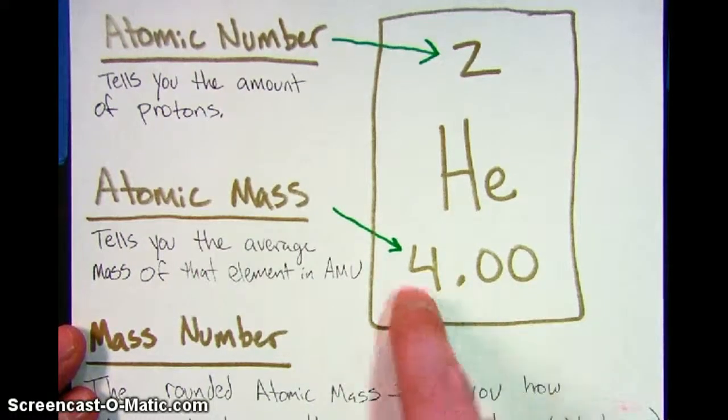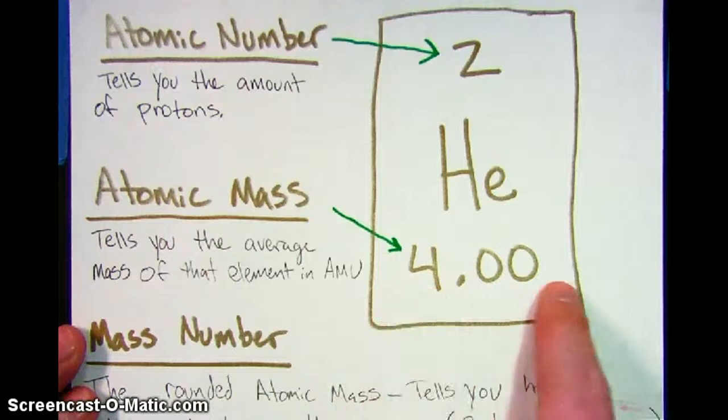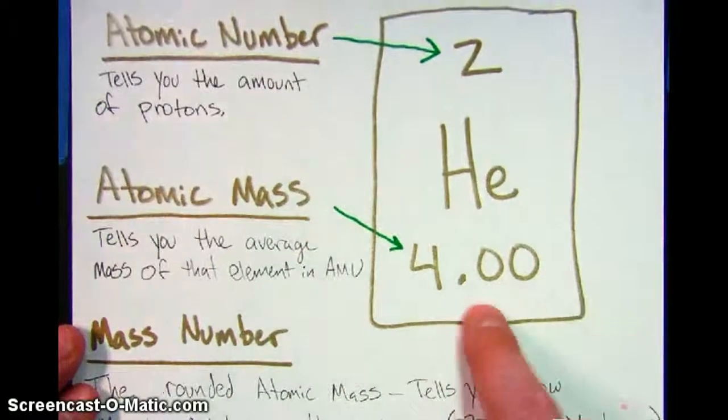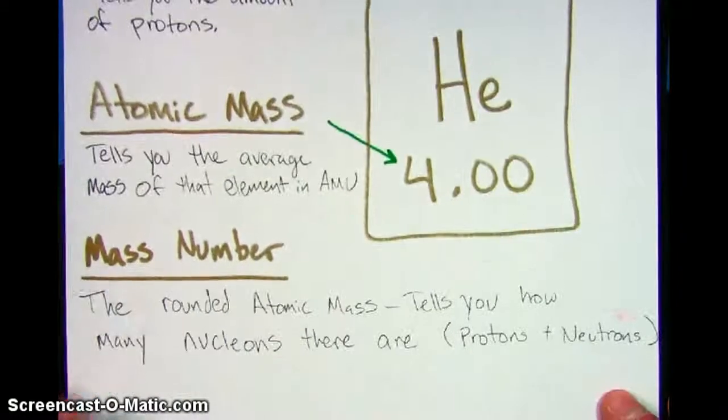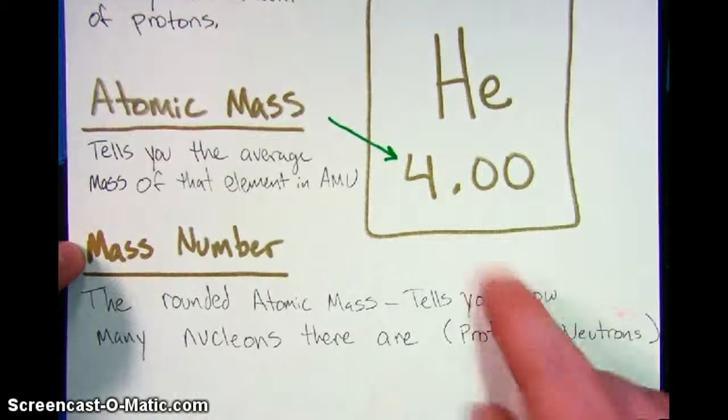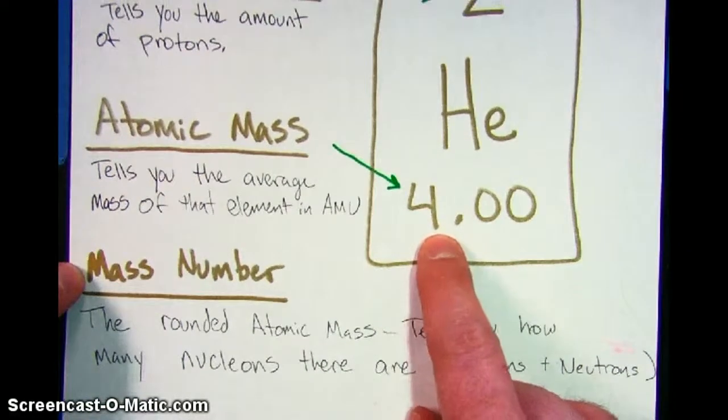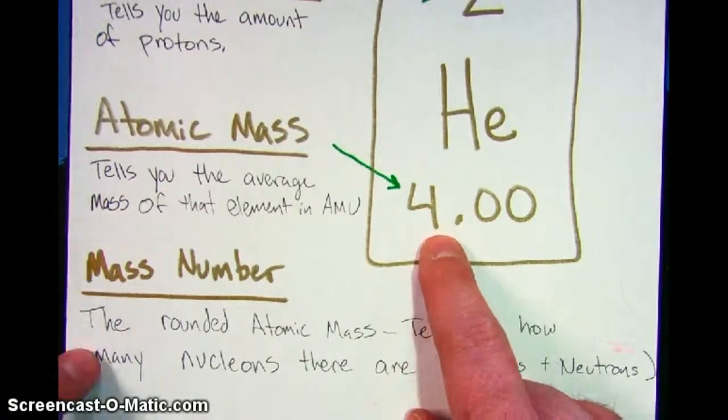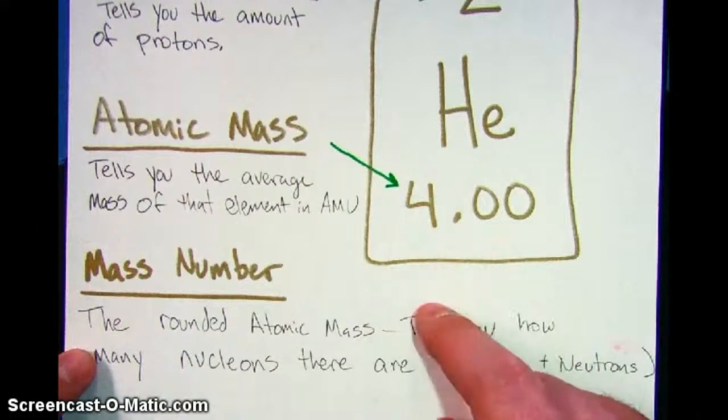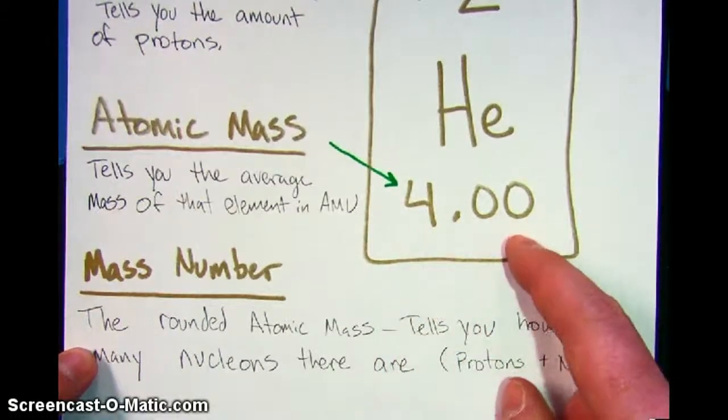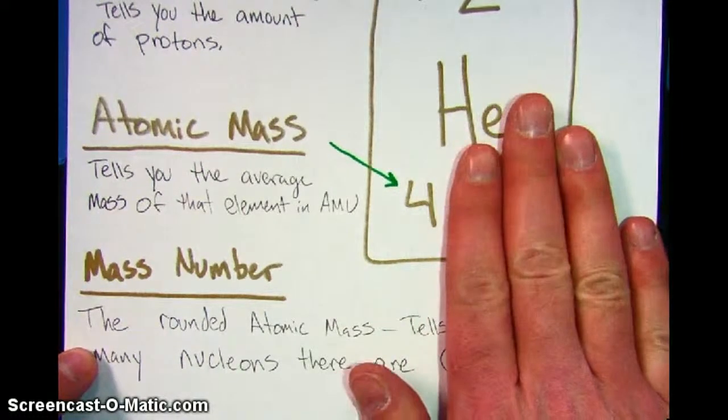The last thing is the mass number. The mass number is when you take the atomic mass and you round it to the nearest whole number. So this helium example is pretty simple because 4.00 rounded to the nearest whole number is 4.